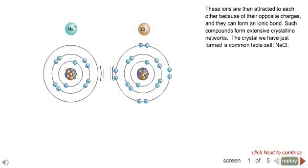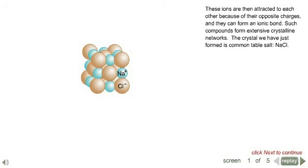These ions are then attracted to each other because of their opposite charges, and they can form an ionic bond. Such compounds form extensive crystalline networks. The crystal we have just formed is common table salt, sodium chloride.